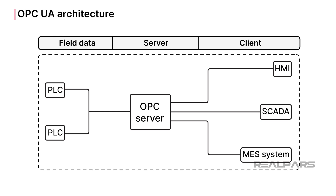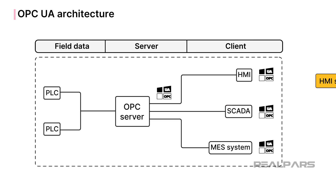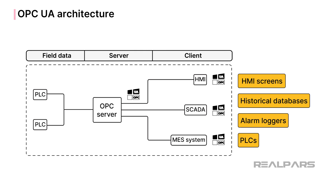To use OPC UA in your control system, you need OPC UA server software to connect to the data sources, such as PLCs, application computers, and HMI stations. You also need OPC UA client software to interact with the OPC UA server and set up subscriptions for periodic data access. This data will be used to store the collected data for use on HMI screens, historical databases, alarm loggers, PLCs, or other applications.